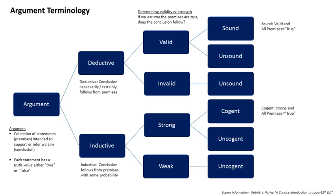Deductive reasoning contrasts with inductive reasoning in the following way. In deductive reasoning, a conclusion is reached reductively by applying general rules which hold over the entirety of a closed domain of discourse, narrowing the range under consideration until only the conclusion is left. In inductive reasoning, the conclusion is reached by generalizing or extrapolating from specific cases to general rules — i.e., there is epistemic uncertainty.